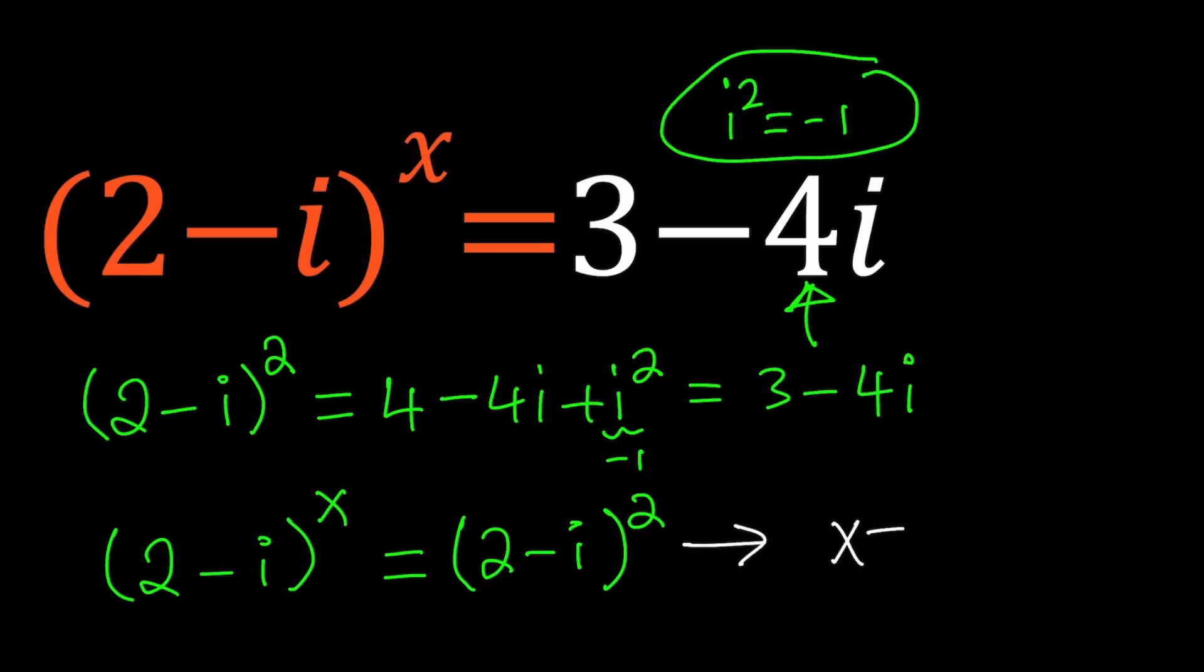So here we can rewrite the equation as (2-i)^x = (2-i)^2. And by doing a 1-to-1 correspondence, we can safely say that x=2 is a solution. I'm not necessarily saying that is the only solution. We'll explore it a little bit. But from here, we can safely say that x=2 works, right? Because when the bases are equal, then the exponents can also be equal.